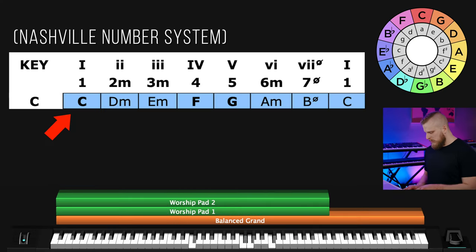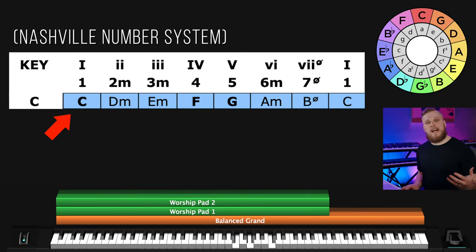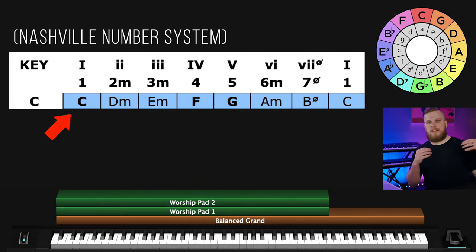Our third and final technique relies on the congregation's desire to identify home base and cling to it — which is almost always going to be the major one chord for us as worship musicians. If we're in the key of C, we can play any other chord, but when we hit that major one — the C chord — it feels resolved, home. So when we make a transition from one key to another, regardless of the relationship between the two keys, the most important thing is to establish where the new home base is.